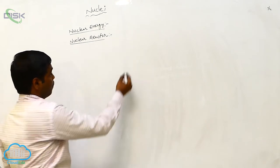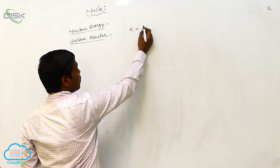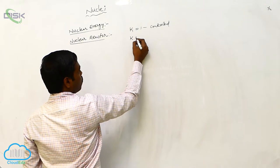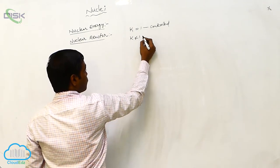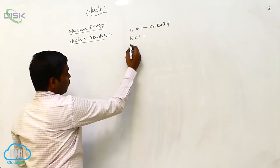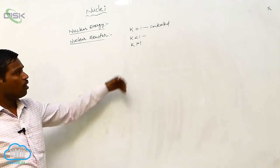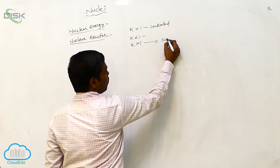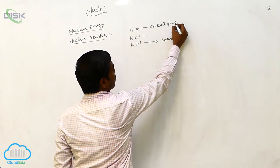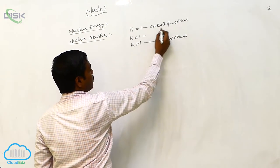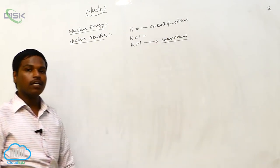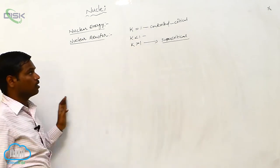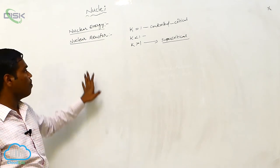When the multiplication factor k equals 1, it is called a controlled chain reaction. If k is less than 1, the number of neutrons released is reducing. If k is greater than 1, more neutrons are released in an uncontrolled manner — this is the supercritical condition, which can lead to an explosion. The nuclear reactor works on the principle of k equal to 1, the controlled chain reaction.